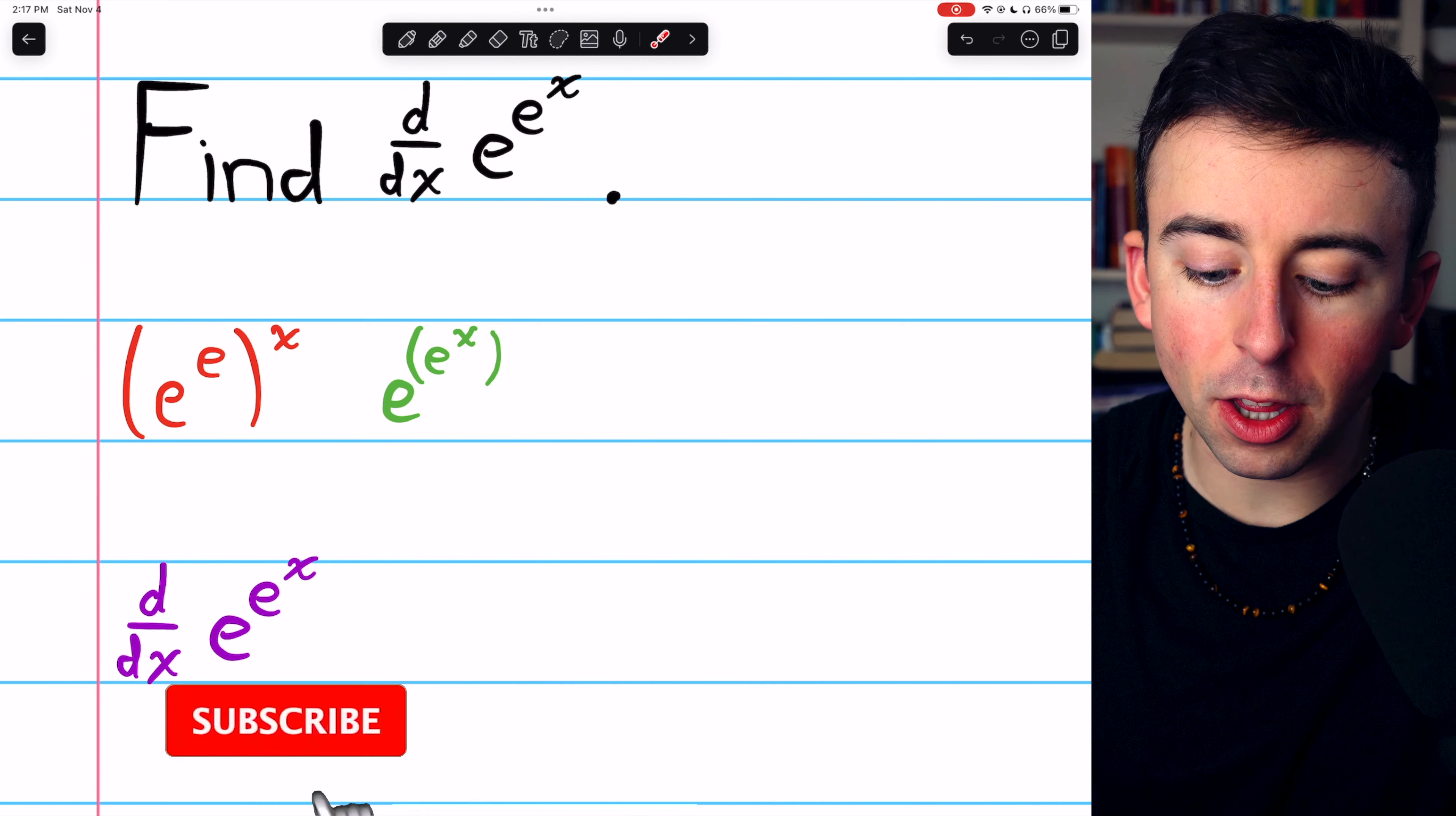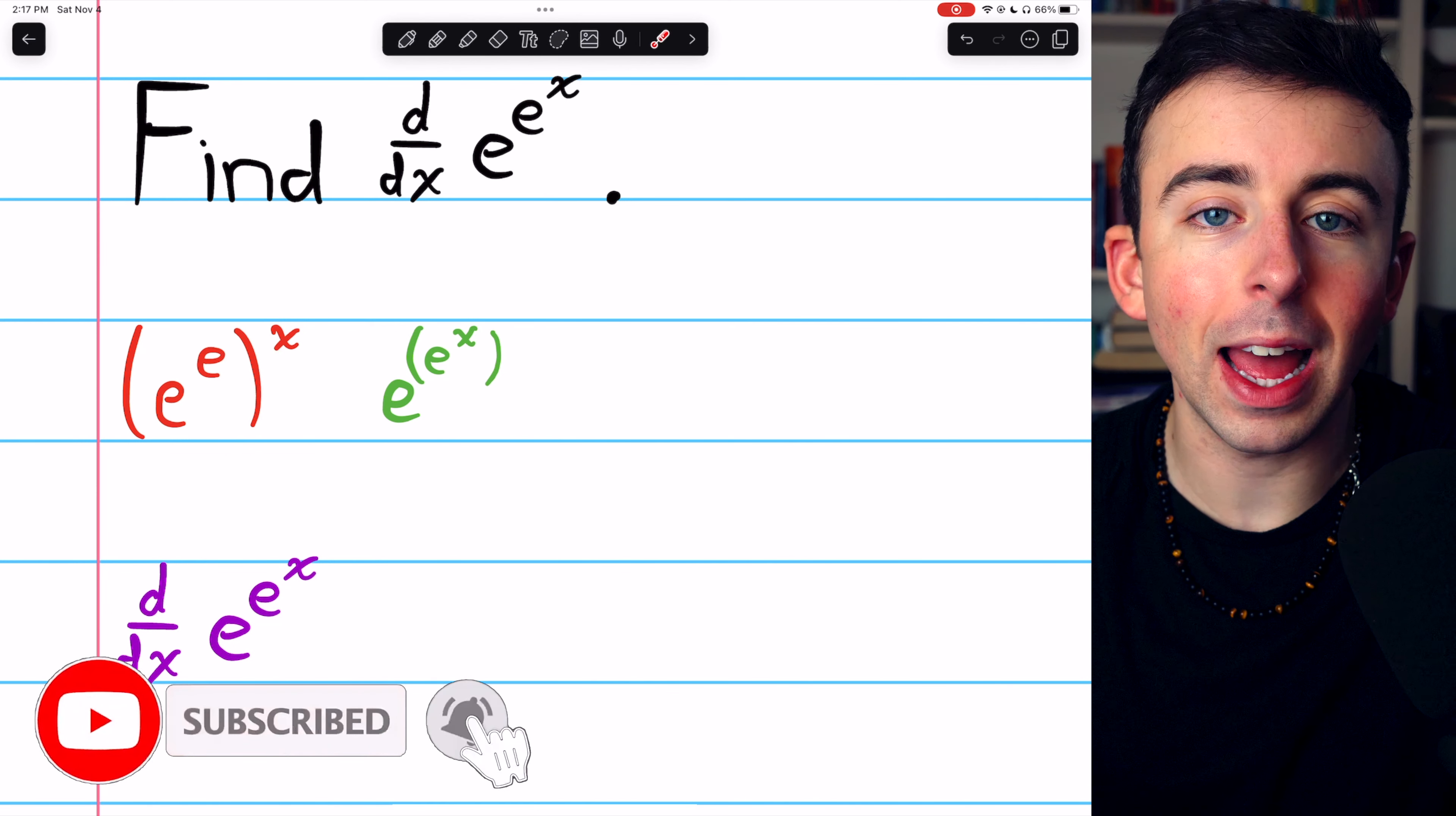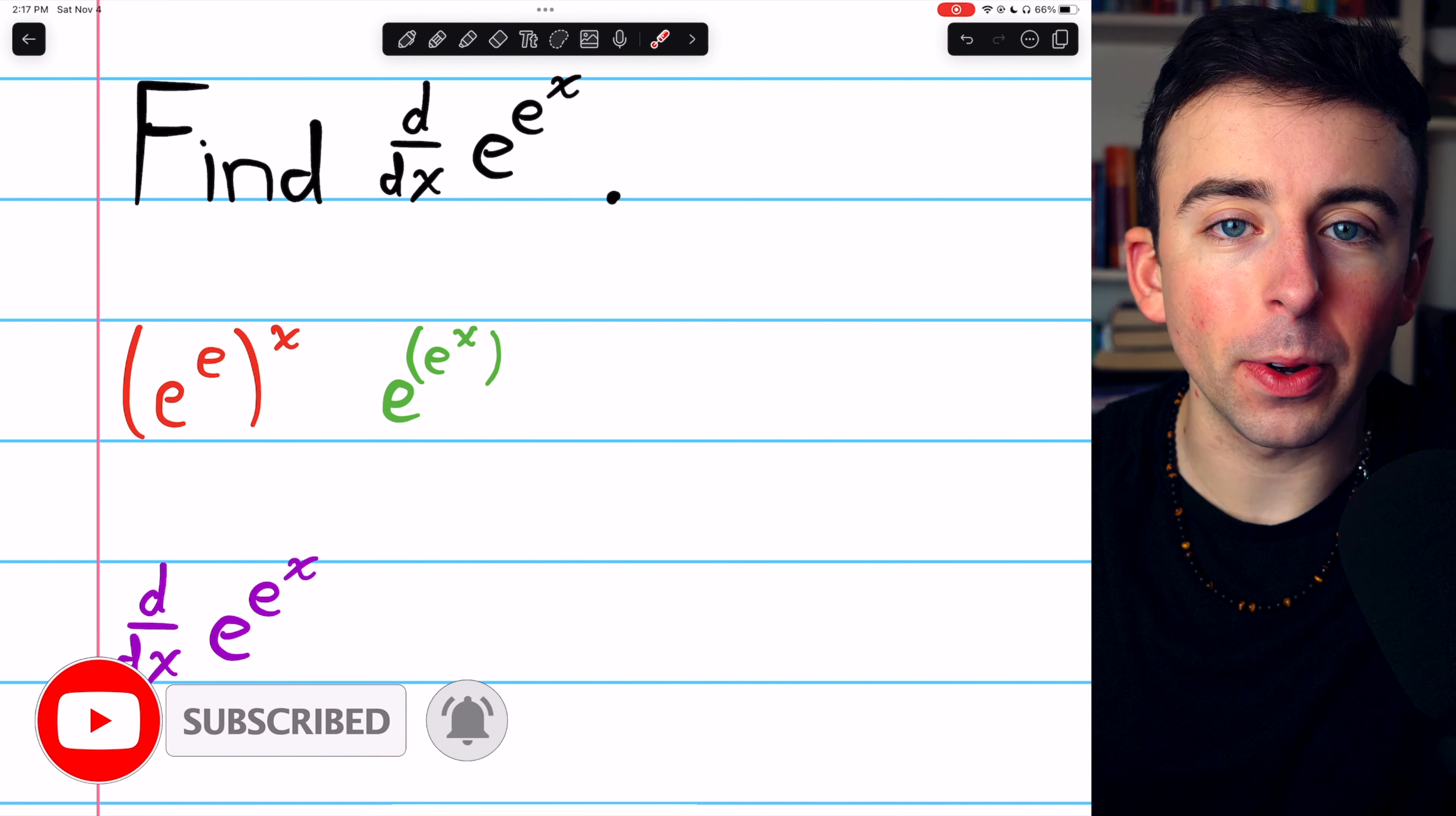Let's find the derivative of e to the power of e to the power of x. Let's make sure we're clear on what we're talking about here.